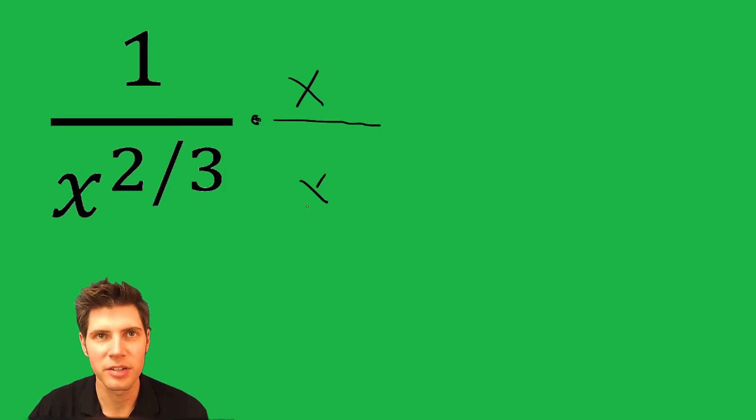We're going to multiply top and bottom by x to the something. What can we multiply x to the two-thirds by to make the two-thirds go away? Well, that's going to be one-third.